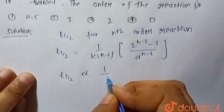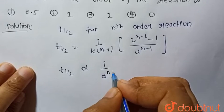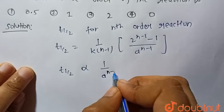So we can clearly see that t_half is inversely proportional to the concentration a to the power (n-1).